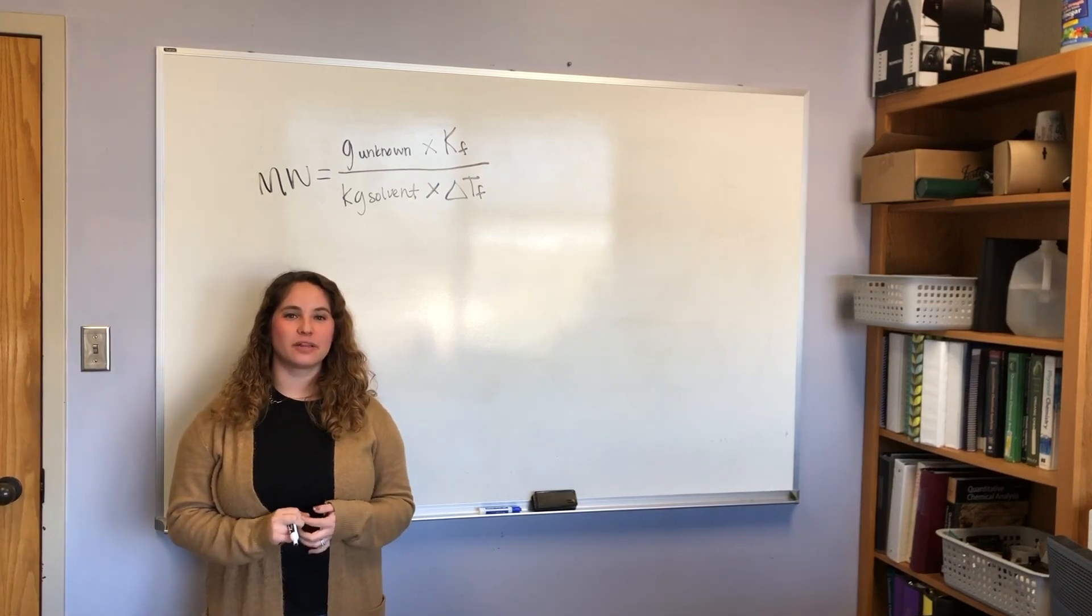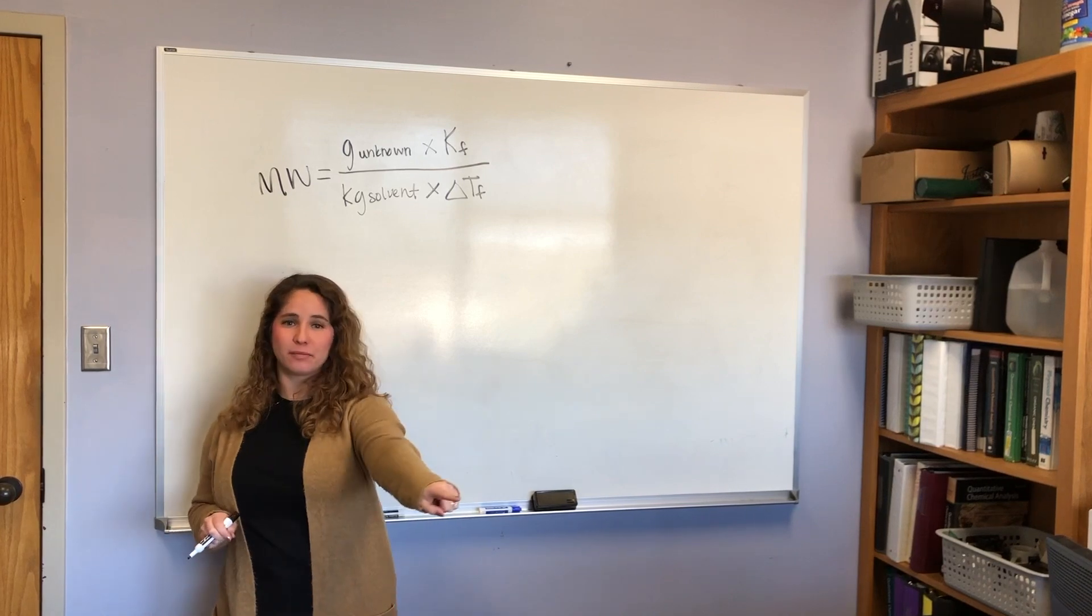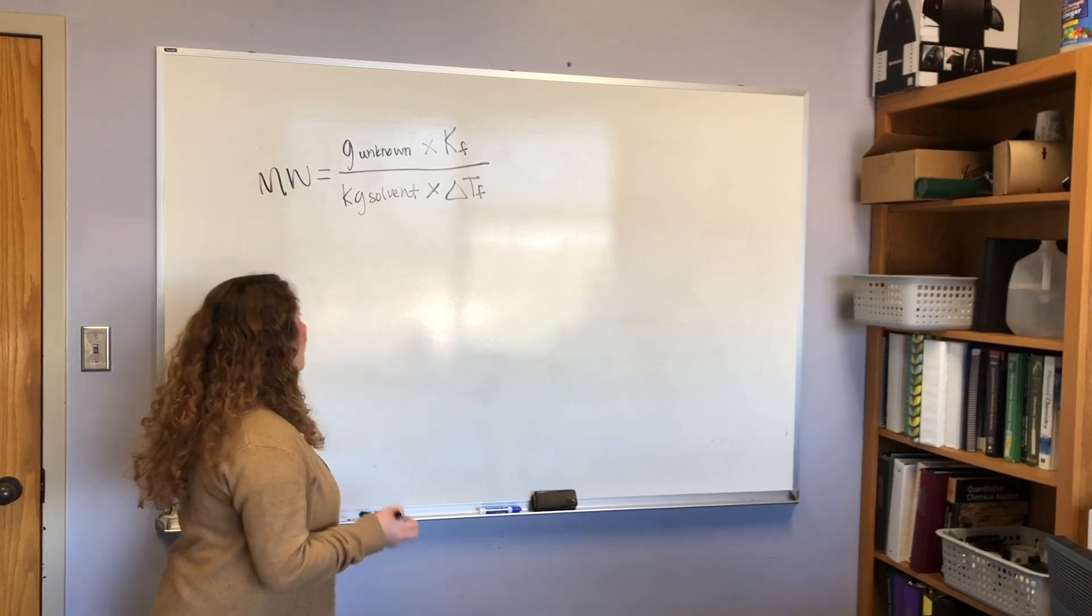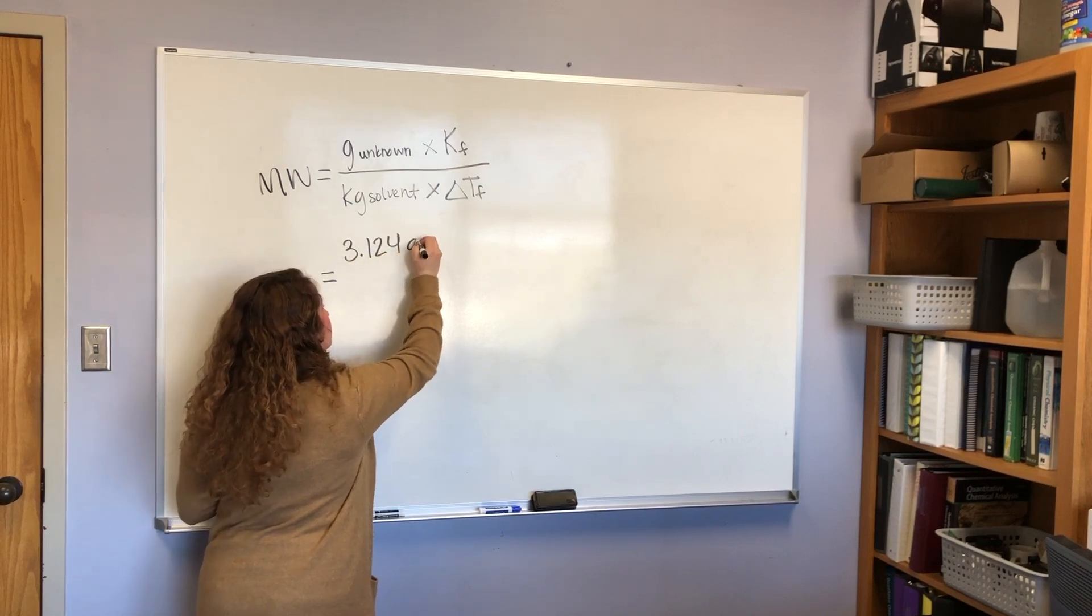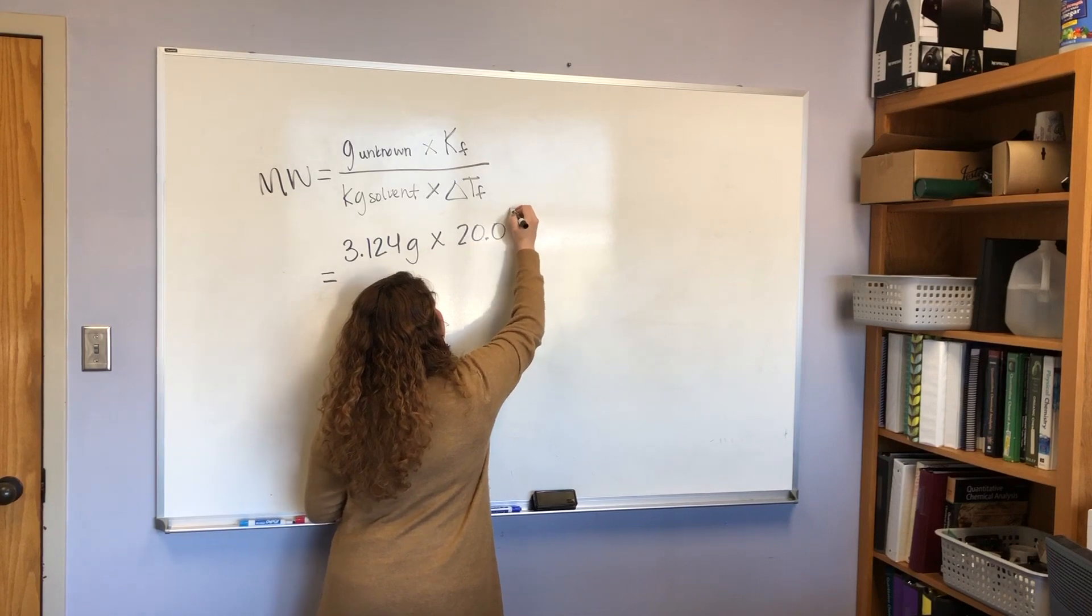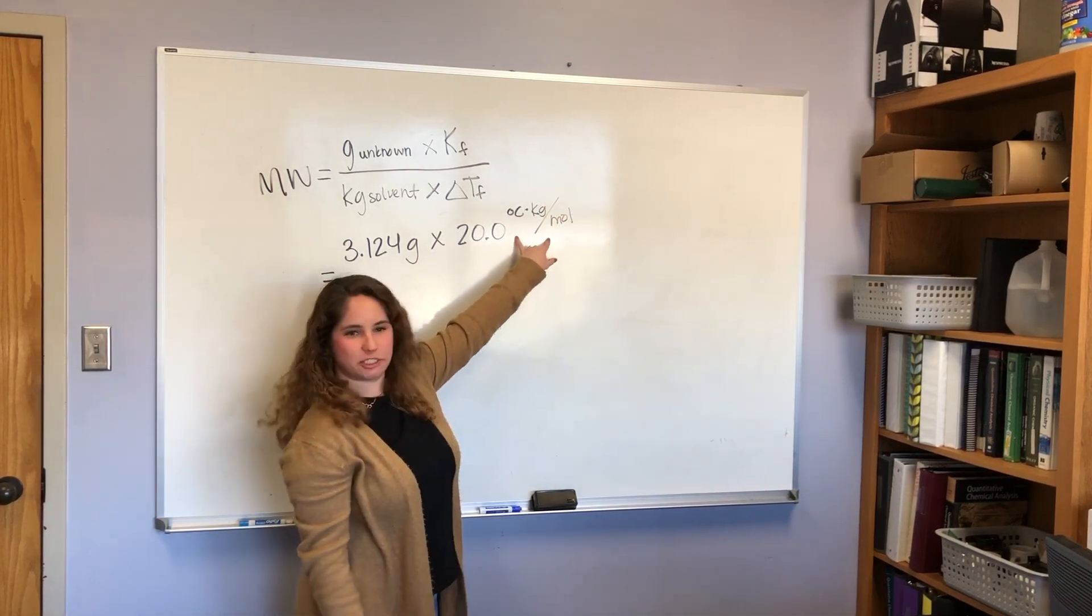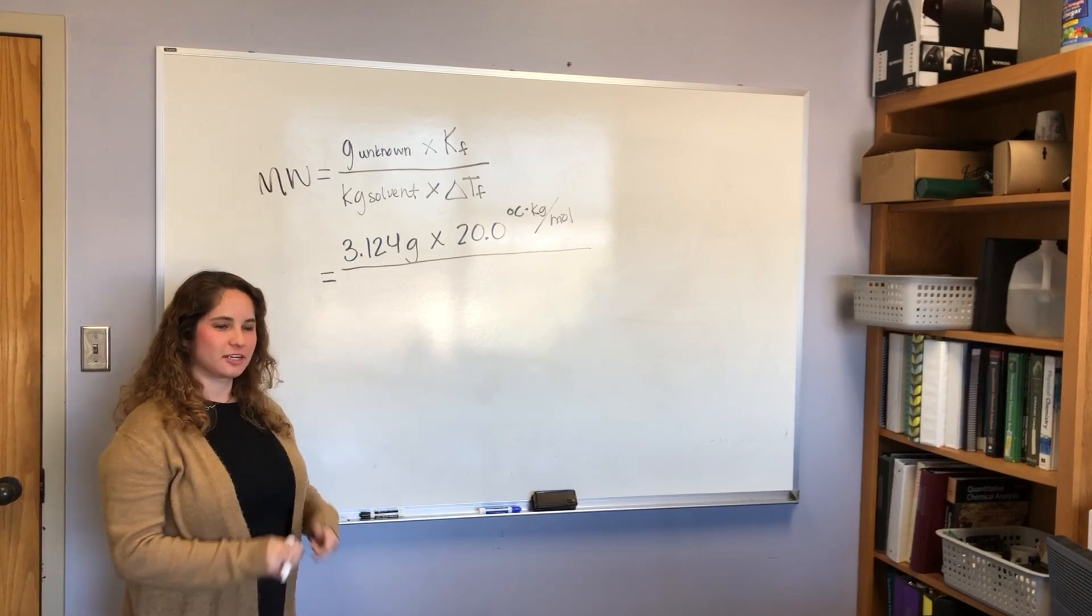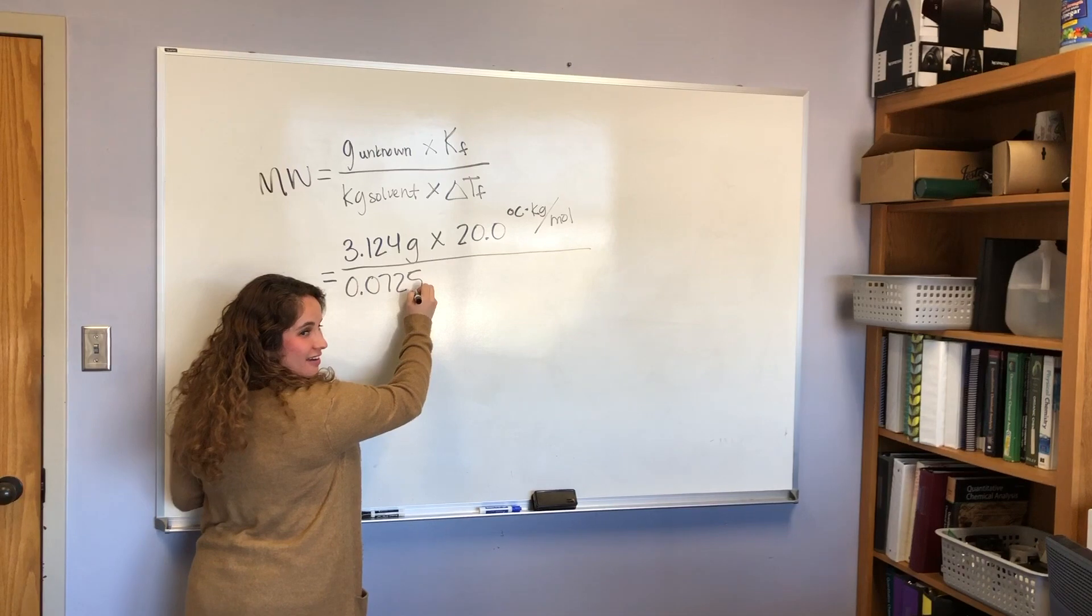The KF is provided at the end of the experimental procedure on page six and I'm actually going to write up the value now as well so you can actually see it. I want to talk about units as well. So we are going to calculate the molecular weight of a totally imaginary unknown using hypothetical experimental data that Dr. Weber and I are going to make up on the spot. So she's going to call out numbers for us and I'm going to write them down, but we are going to keep the KF value the same to minimize potential confusion. So how many grams of our unknown did we weigh out Dr. Weber? 3.124. Okay, great. We measured out 3.124 grams.